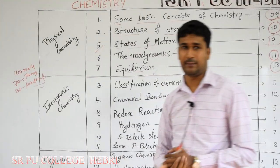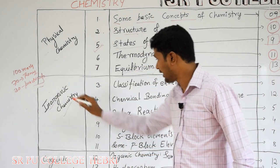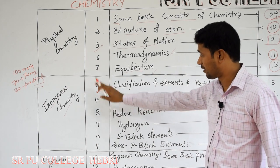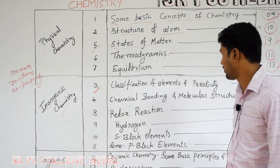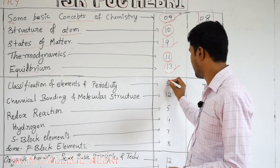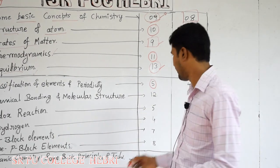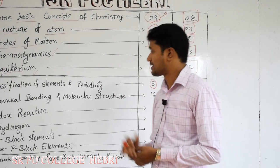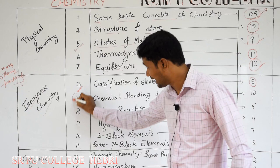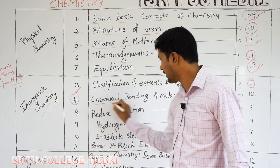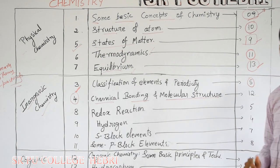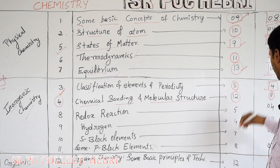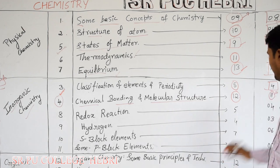The second part in chemistry is inorganic chemistry, which has 6 chapters. Chapter number 3, 'Classification of Elements and Periodicity,' is a small chapter — total hours allotted is 5 and weightage is 4 marks. The second inorganic chemistry chapter, chapter number 4, is 'Chemical Bonding and Molecular Structure.' Total hours allotted for this chapter is 12 and total weightage of marks is 11.